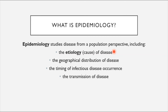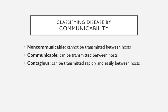Epidemiologists classify diseases in terms of these different aspects. One way is based on communicability. Some diseases are non-communicable — meaning although they are infectious, they cannot be transmitted between hosts. Tetanus is an example: it can be caught when the bacterium enters through a puncture wound, but it cannot be transmitted between people. Communicable diseases can be transmitted between hosts. A special subset are contagious diseases, which can be transmitted rapidly and easily between hosts — communicable diseases that transmit very efficiently.